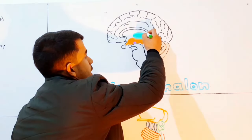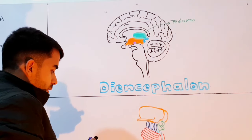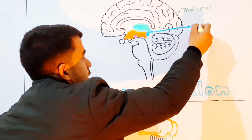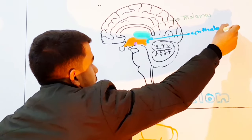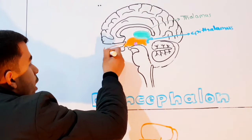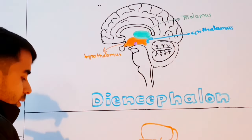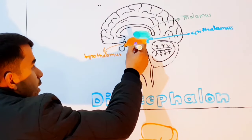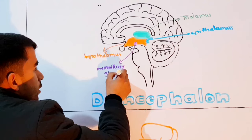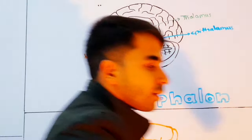The diencephalon is composed of: the thalamus (the green structure here), the epithalamus (this little tiny structure), the hypothalamus (the orange structure here), and the mammillary body (this little structure here). Note: it is called the mammillary body, not the mammillary gland.